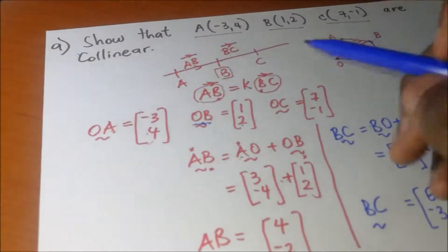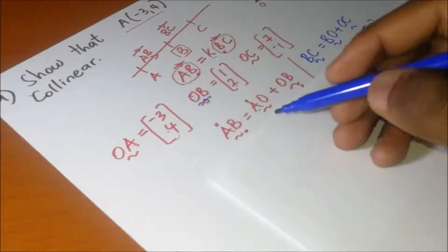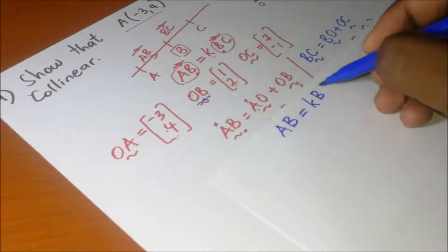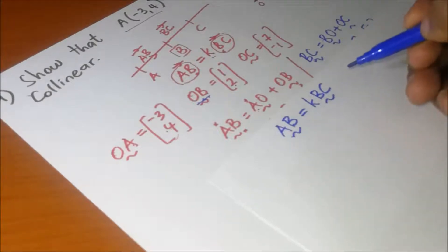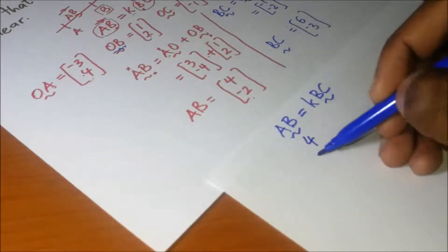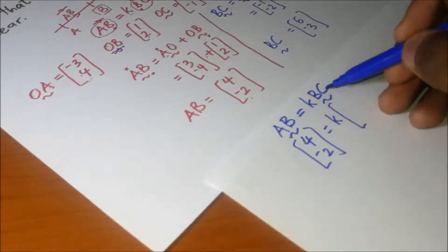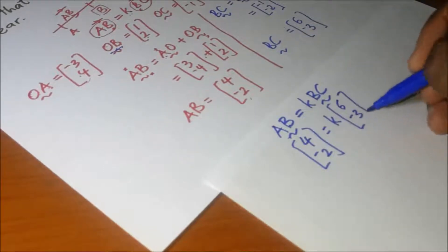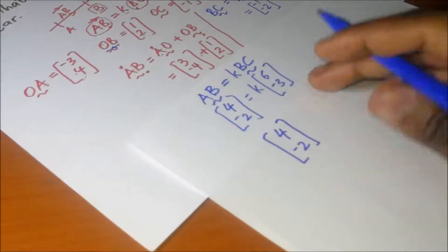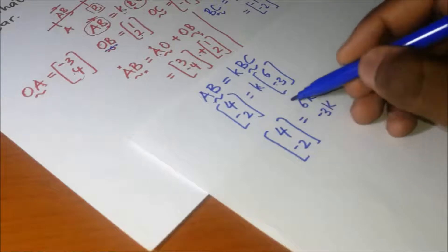Now, just as we've been doing, we find the value of k. We set up AB equals k times BC. Our AB is (4, -2) and our BC is (6, -3), so we have (4, -2) = k·(6, -3), which gives us (4, -2) = (6k, -3k).